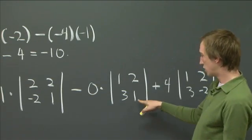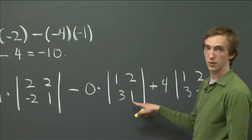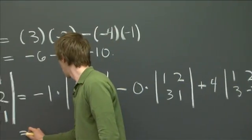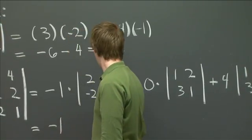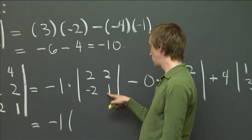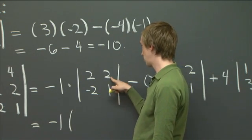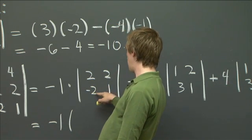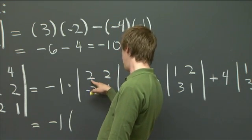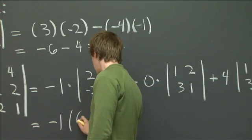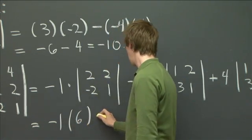And now notice that these are just 2 by 2 determinants. And we can just compute those the same way we did earlier. Altogether, we get minus 1 times 2 minus another 2. 2, excuse me, 2 minus a negative 4. So we get 6.